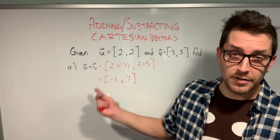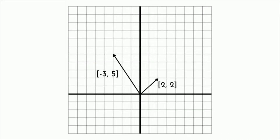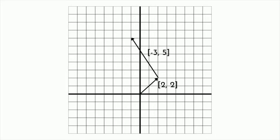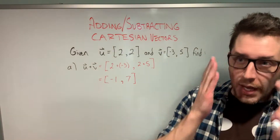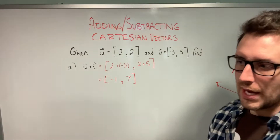Let's take a moment to interpret this vector addition graphically. I've drawn both vectors U and V by plotting (2, 2) and (-3, 5) and drawing vectors from the origin to those points. I've also drawn the resultant vector (-1, 7). When we arrange these two vectors tip to tail, the resultant vector fits snugly in between — it takes you from the beginning of the first vector to the end of the second vector.